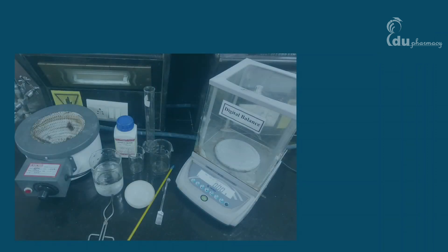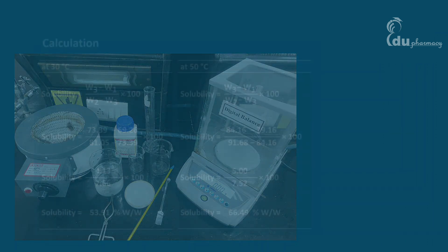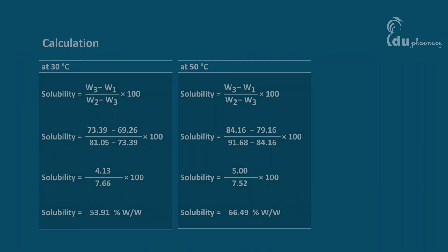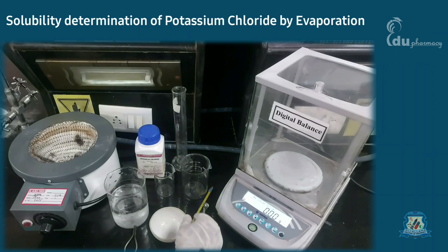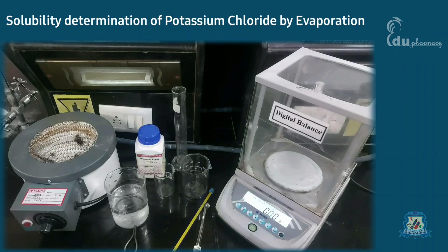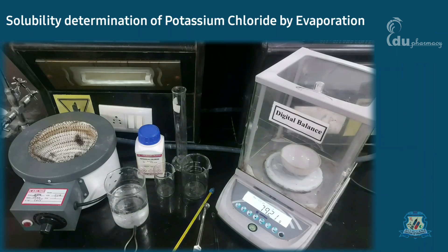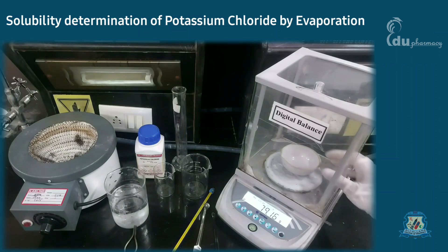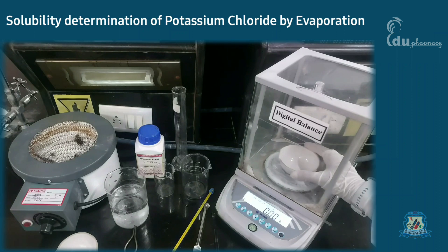Firstly, I will cover the experimental part, then I will show you the calculation of solubility. The first step is to take the weight of each empty porcelain dish. This will help us to calculate the solubility.